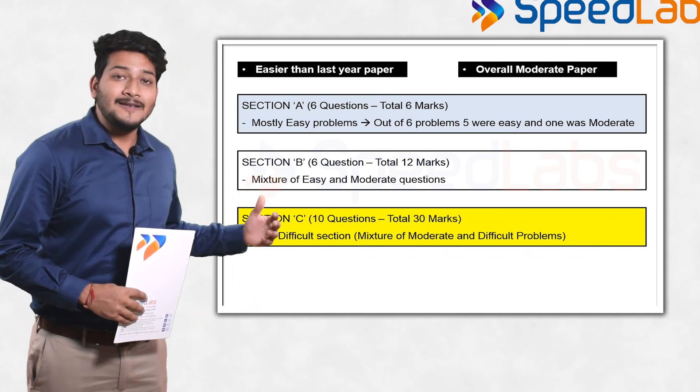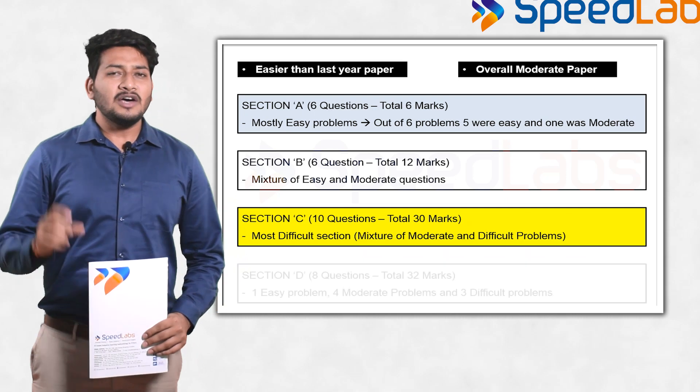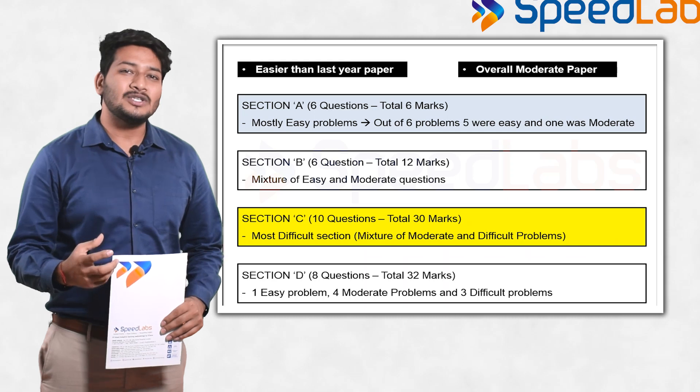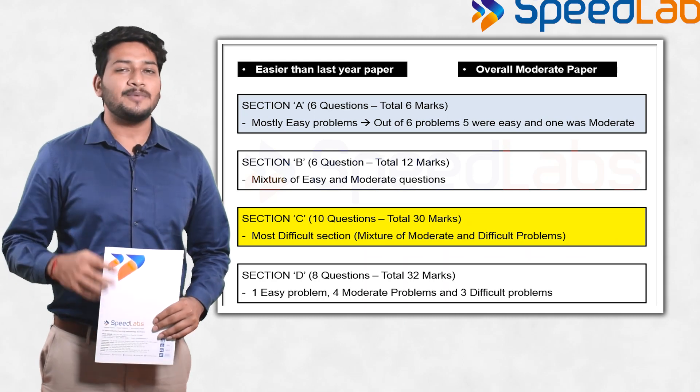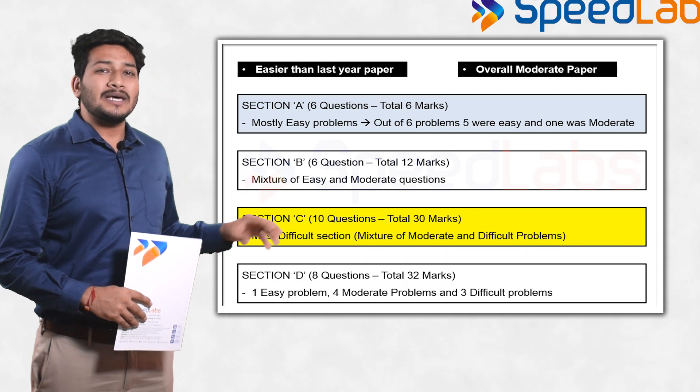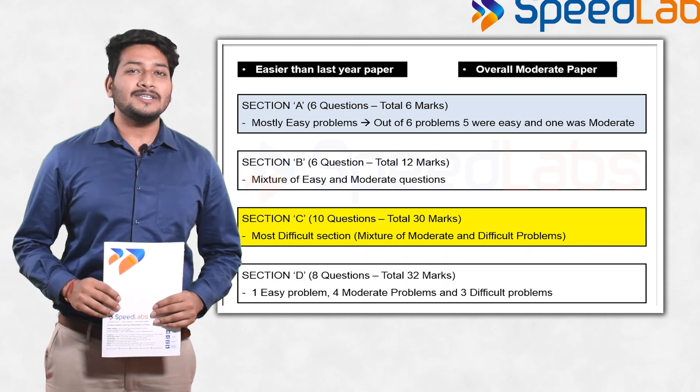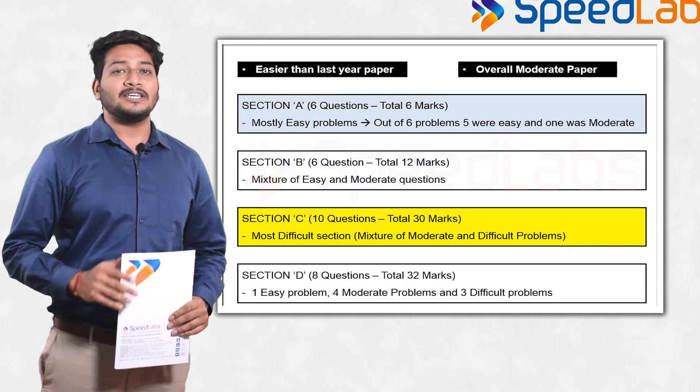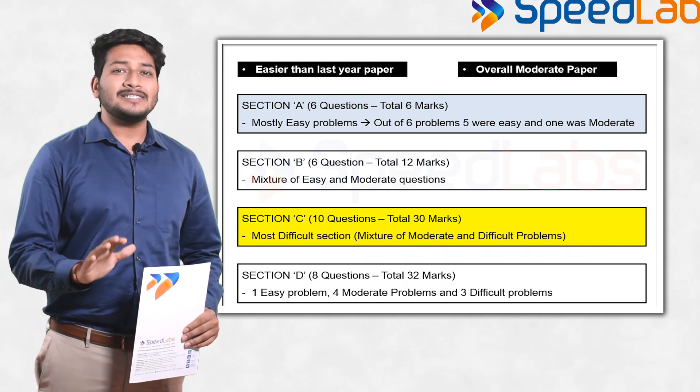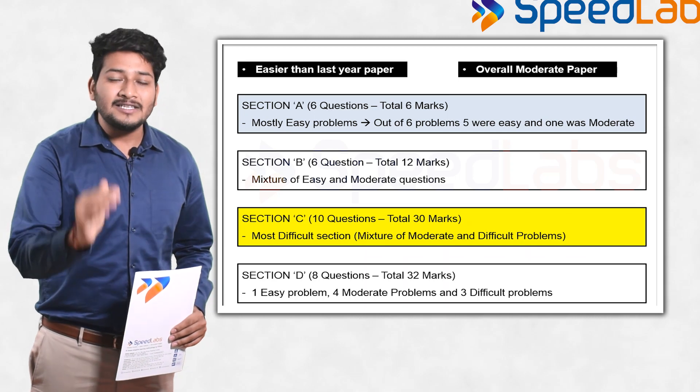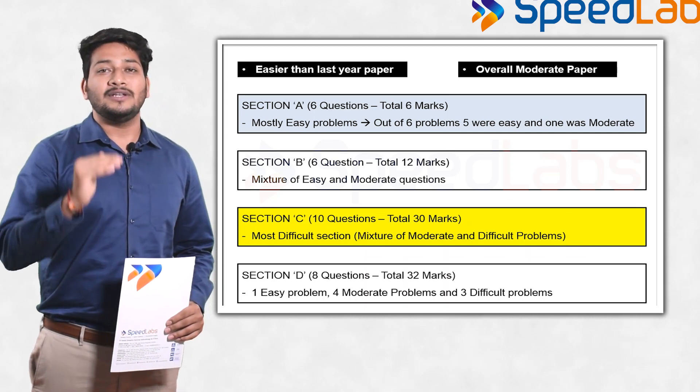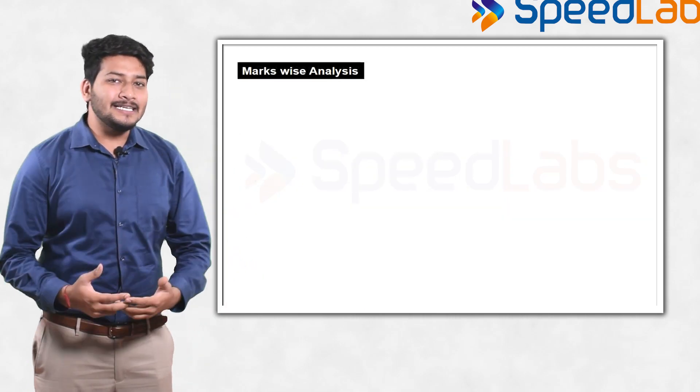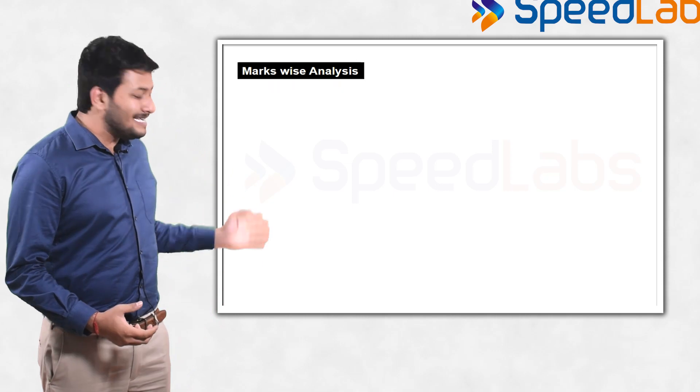If you talk about Section D, it was again a balance of moderate and difficult problems. In Section D I have kept one question in the easy section, four in moderate, and three I'm keeping in the difficult section. Overall it was a balanced paper for average students, below average students, and for the intelligent students.